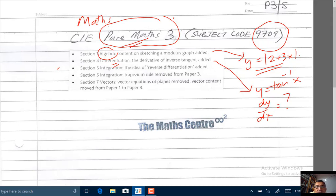In section 5, integration, the idea of reverse differentiation is added. That means if you are given y equals arctangent x, you can get dy dx. Reverse differentiation is going back from dy dx to y. If you're given y equals arctangent x, you can find dy dx, that's differentiation. Reverse differentiation is given dy dx, going back to your original function. So that's been added.